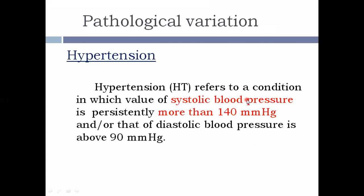Now let's come to the pathological variations. Hypertension is when blood pressure is above the normal range. It refers to a condition in which the systolic blood pressure is persistently more than 140 mmHg or the diastolic blood pressure is more than 90 mmHg. When only systolic blood pressure is elevated, it is called systolic hypertension.